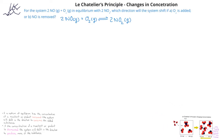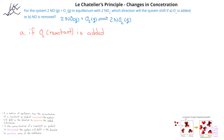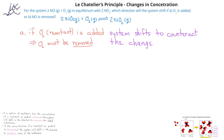Let's see if we can use what we just learned to make predictions. We're given the system 2NO gas reacting with 1 mole of O2 gas to produce 2 moles of NO2 gas, and we're asked which direction will the system shift: first if O2 is added, or second if NO is removed. In the first situation, we're adding O2, which is a reactant. Le Chatelier's principle says the system will shift to counteract what we did, or to remove O2. Since we added O2, the system will try to remove O2 by shifting to the right to use up O2 and produce more NO2.